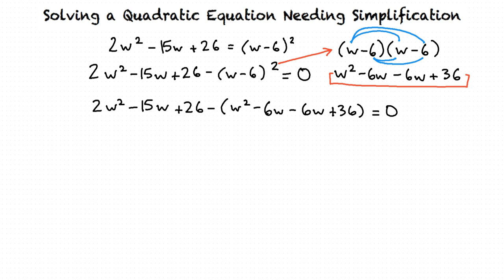Replacing w minus 6 squared with our expanded polynomial. We will then distribute the negative sign in front of the polynomial into the whole quantity for a result of 2w squared minus 15w plus 26 minus w squared plus 6w plus 6w minus 36 equals 0.